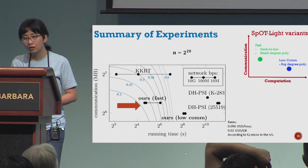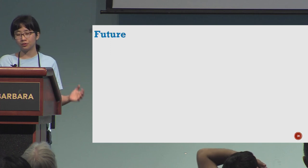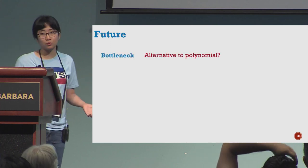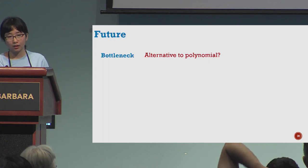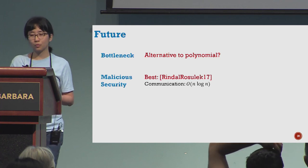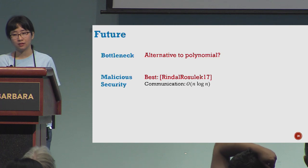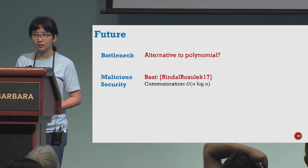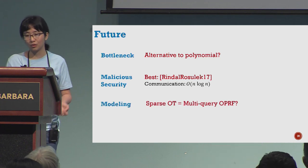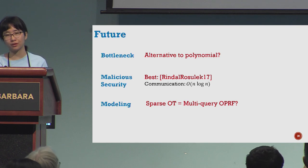For future work, you can see that the bottleneck of our protocol is the polynomial operations, so any alternative solution for that would be valuable. This talk is for semi-honest settings, so can we have a linear communication PSI for malicious settings? The last question pointed out by a reviewer: can we view our Sparse OT as a multi-query OPRF?